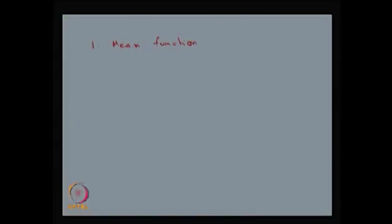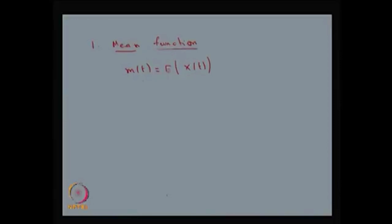The first definition is the mean function. The mean function is defined with the notation m(t), which is nothing but the expectation of the random variable x(t). The stochastic process is the collection of random variables x(t) over t belonging to capital T, and you define the mean function as a function of t, that is the expectation of x(t). Sometimes it is going to be a function of t, sometimes it is independent of t. According to whether it is a function of t or independent of t, we can classify the stochastic process. So this definition of the mean function is very important.